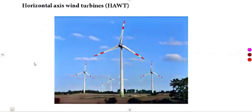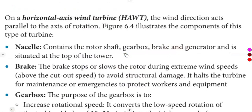On a horizontal axis wind turbine, the wind direction acts parallel to the axis of rotation. That is, the wind direction is parallel to the axis of rotation.